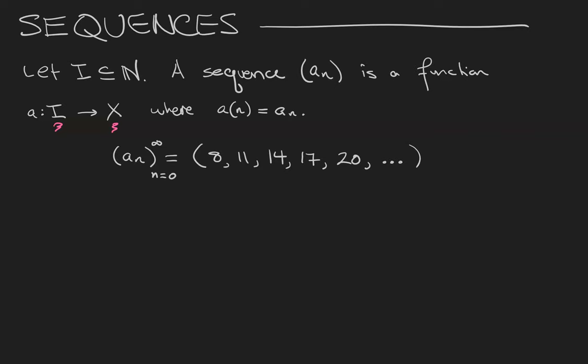Here's an example of a sequence. We have the sequence a sub n which starts at n equals 0 and goes all the way up to infinity, meaning that the sequence doesn't end. Where the first term of the sequence is 8, the next term is 11, 14, 17, 20, and so on.